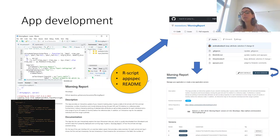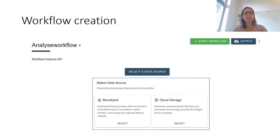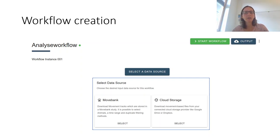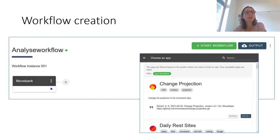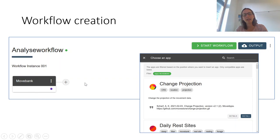New versions of apps can be submitted if you want to improve the apps, which is probably a good idea. How are these apps then joined into workflows? First, one has to initialize a workflow and select a data source. This can be MoveBank, or you can upload a CSV or an RDS file from a cloud storage of yours. And once the data has been fixed, you can click on the plus button and add any number of other apps to combine into a workflow.